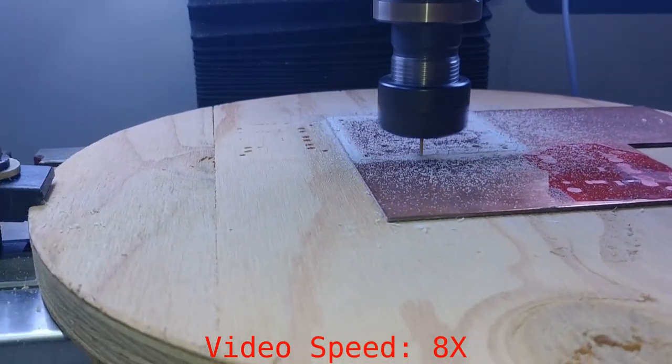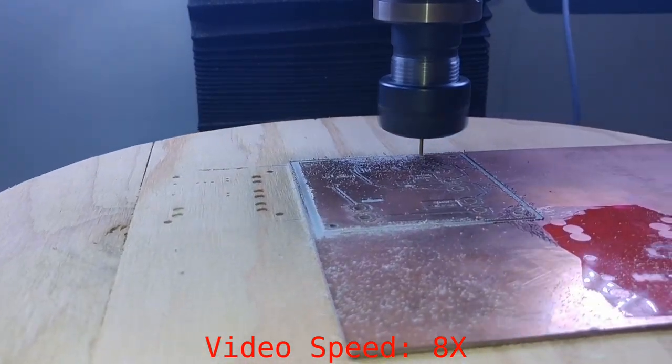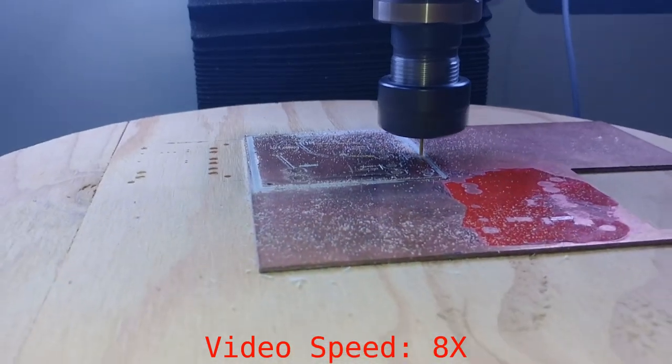I'm using my 1.5 mm titanium coated tungsten carbide engraving bit for both of these operations, and here are my feeds and speeds.